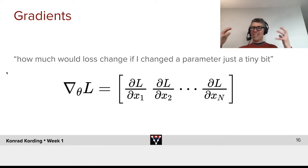So, gradients, you've all seen gradients, but just the intuition here: how much would the loss change if I changed the parameter just a tiny bit? You can say the gradient vector basically contains the partial derivative of the loss after each of the components of the vector x that I have.